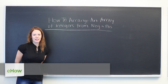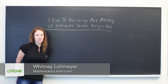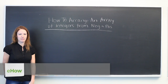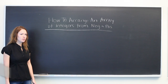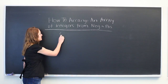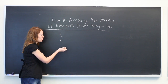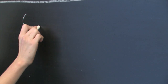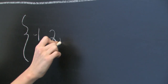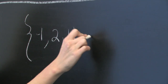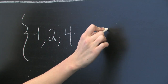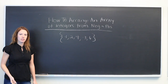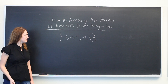Hello, my name is Whitney and this video explains how to arrange an array of integers from negative to positive. An array is simply a list of numbers. We're going to start with the array: minus 1, 2, 4, minus 3, and 6, and arrange this from negative to positive.